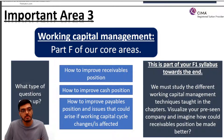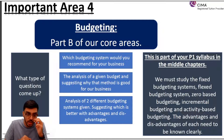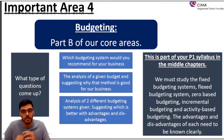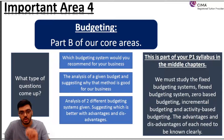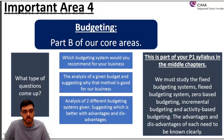Working capital management is part F of your core areas. Next is budgeting — an important topic that often comes up, and it's part B of your core areas and part of your P1 syllabus. P1 is the most important pillar of this exam — absolutely clear, concise knowledge of P1 is required. The types of questions for budgeting are quite varied, but the first common type is: which budgeting system would you recommend for your business?